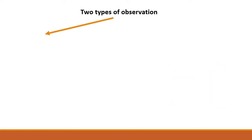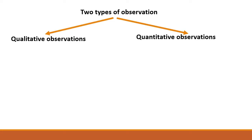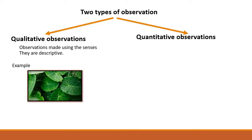There are two types of observations: qualitative and quantitative observations. When we say qualitative observations, these are made using your senses and they are descriptive. For example, look at the picture — that picture is a taro plant. We will use our five senses to describe this plant using qualitative observations. First, the taro leaves are green — I underlined the word green because I'm using my sense of sight. Next, they are waxy and smooth — I underlined waxy and smooth because I use my sense of touch. Don't forget, when we say qualitative observations, you must use your five senses.